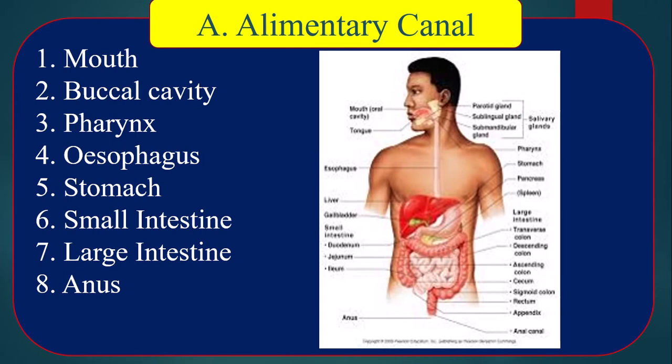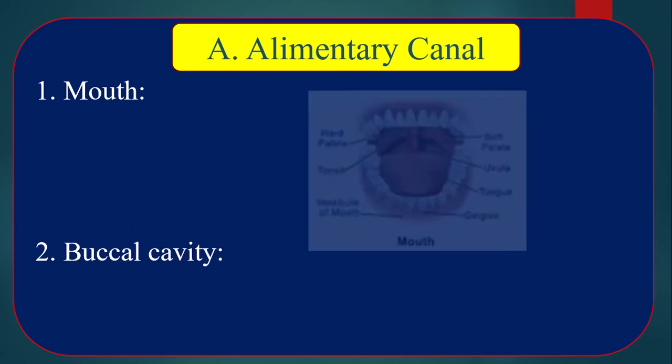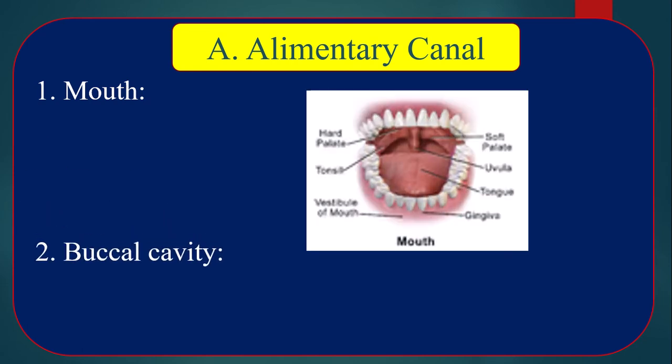The mouth is the starting point of our alimentary canal. It is a transverse opening below the nostril, bounded by two lips — upper lip and lower lip. Its function is to help intake food. Number two is the buccal cavity.